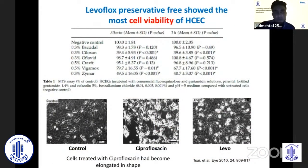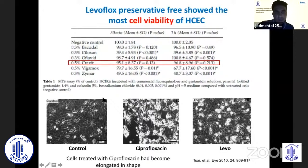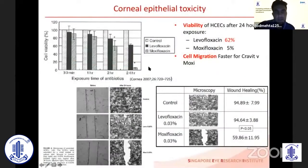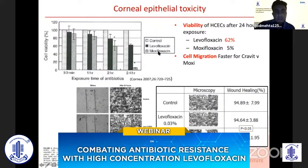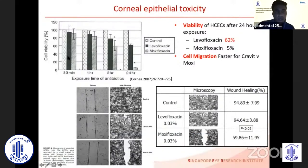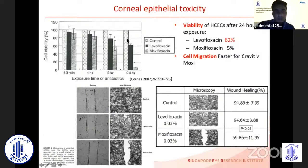An important consideration, especially for ocular surface or anterior segment surgeons doing penetrating keratoplasty, is the effect on epithelial growth. When comparing viability of epithelial cells, levofloxacin 0.5% compared to control and Cipro: levofloxacin offers one of the highest levels of viability of human corneal epithelial cells. This is shown in another comparison where levofloxacin is compared to moxifloxacin postoperatively — cell viability at 24-hour exposure is 62% with levofloxacin, but only 5% with moxifloxacin.